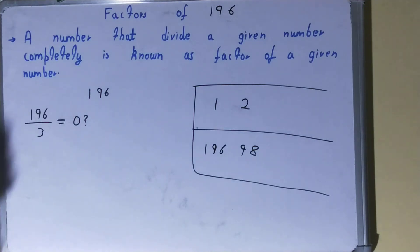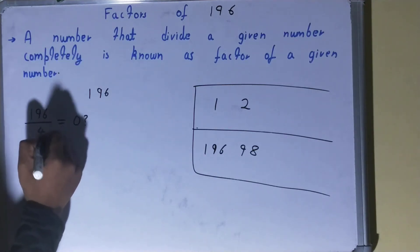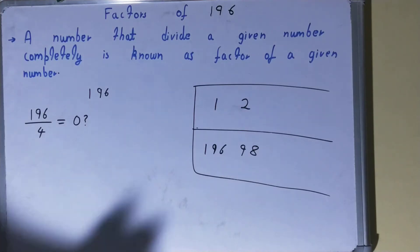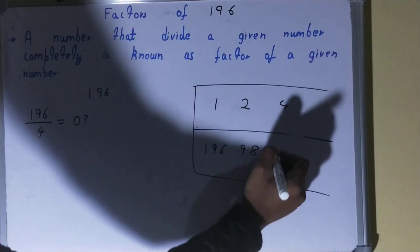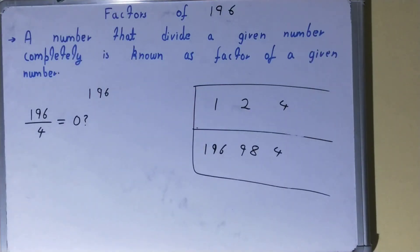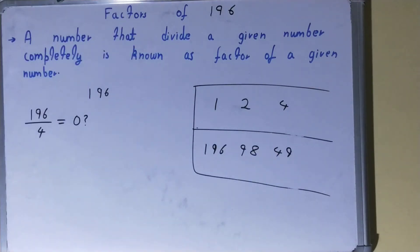After two, we try three — not a factor. Let's try four: 4 times 49 is 196, so four is divisible. Four is a factor, and 49 will also be a factor.